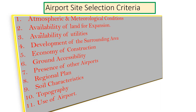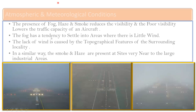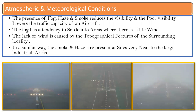Coming to the atmospheric and meteorological conditions: the presence of fog, haze, and smoke reduces visibility, and poor visibility lowers the traffic capacity of an aircraft. During the rainy season and especially in November and December during winter, we usually encounter flight delays. The main reason is fog. Fog has a tendency to settle into areas where there is little wind, making it difficult for the pilot to do landing operations.